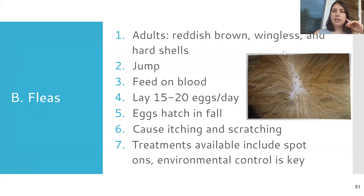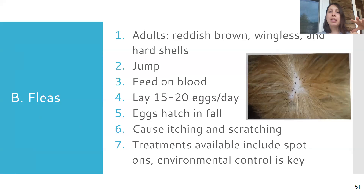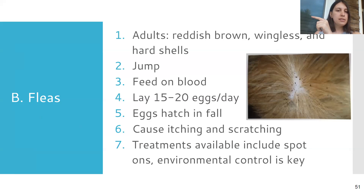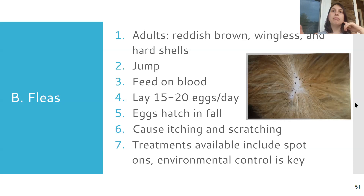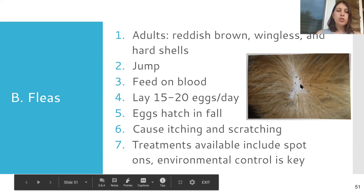First up is fleas, just because they're super common — almost all animals end up getting fleas at some point in their life. If you've seen fleas, they're these little reddish-brown, wingless, hard-shelled external parasites. They seem really fast because they jump from place to place rather than running. Ticks are very slow creatures, but fleas are really fast — if you don't get them on that first grab off your animal, you're probably not going to find them because they'll burrow somewhere else in the hair.